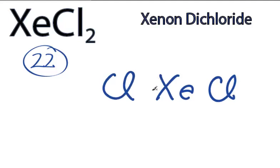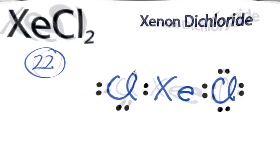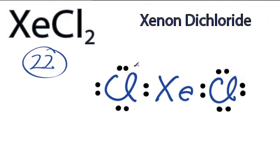We have 22 valence electrons. We'll put 2 between atoms to form chemical bonds. We've used 4, and then we'll go around the chlorines to fill their octets, or until we run out of 22 valence electrons. We have 4, 6, and 16, back to the central xenon.